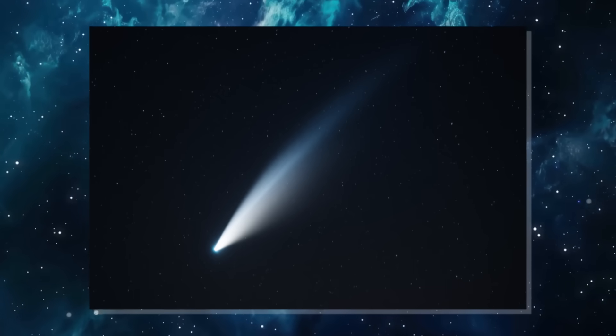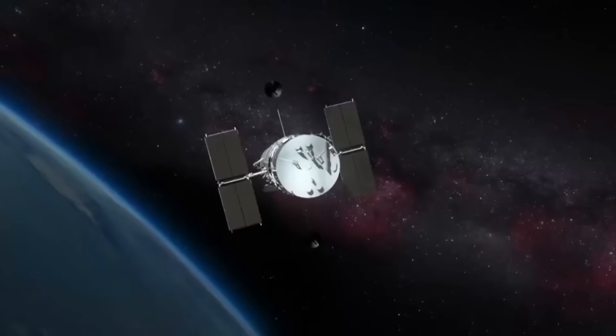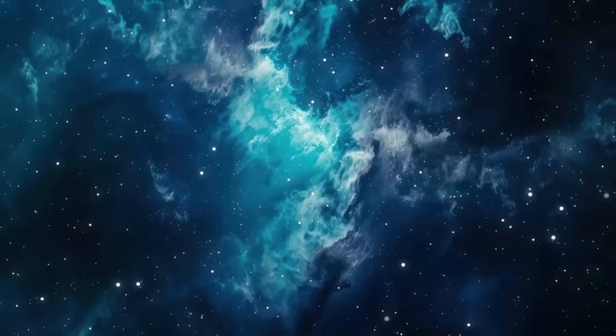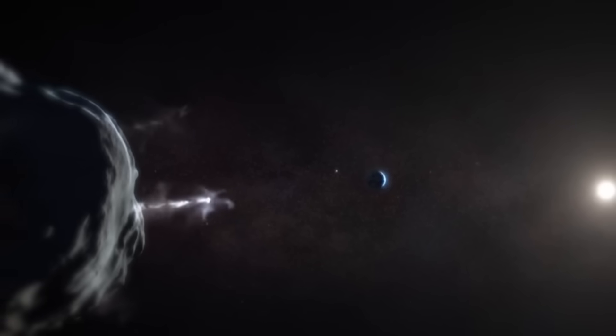If either object fragments near perihelion, the resulting debris could shower the inner solar system, creating a spectacular meteor display, or a hazard to satellites and spacecraft. Whatever the outcome, the October window represents a once-in-a-lifetime alignment, and its implications may extend far beyond astronomy. What is most disconcerting, however, are the properties these objects appear to possess.